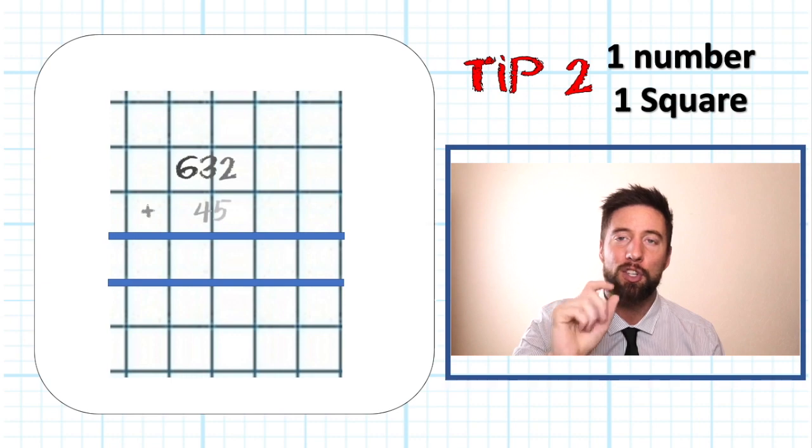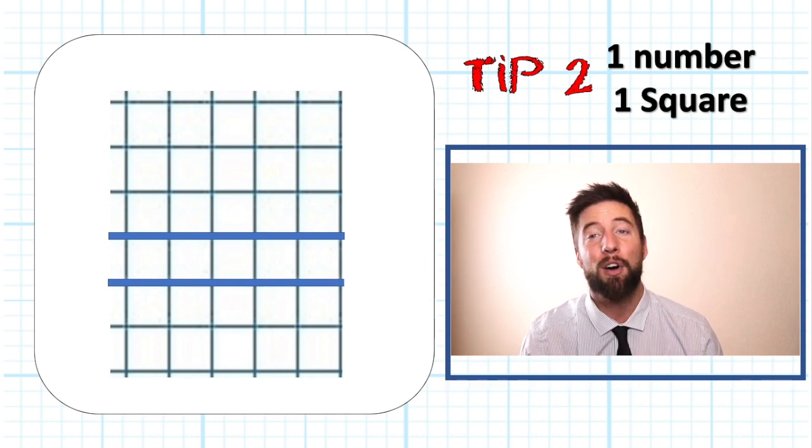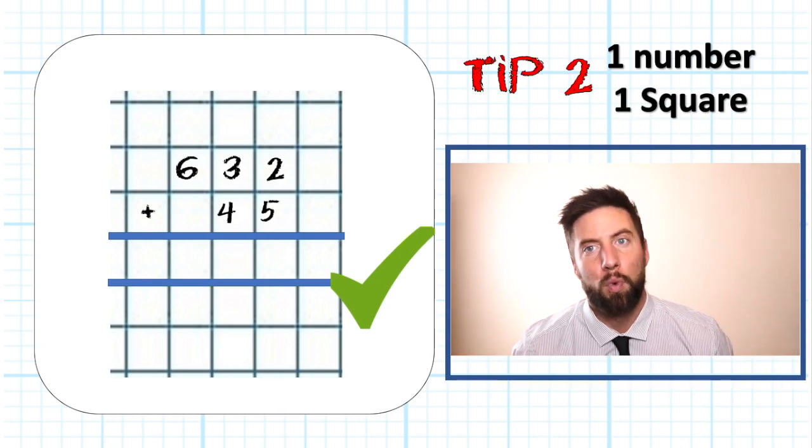You will notice a big difference in your presentation and you will notice a big difference in the small mistakes you are now avoiding. Tip number two, one box, one number.